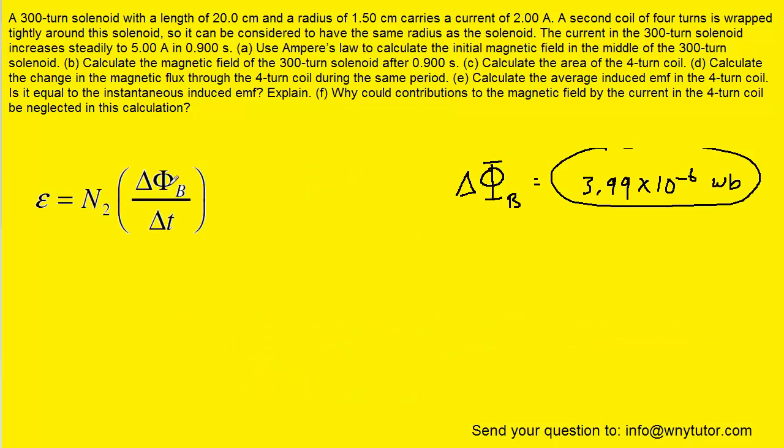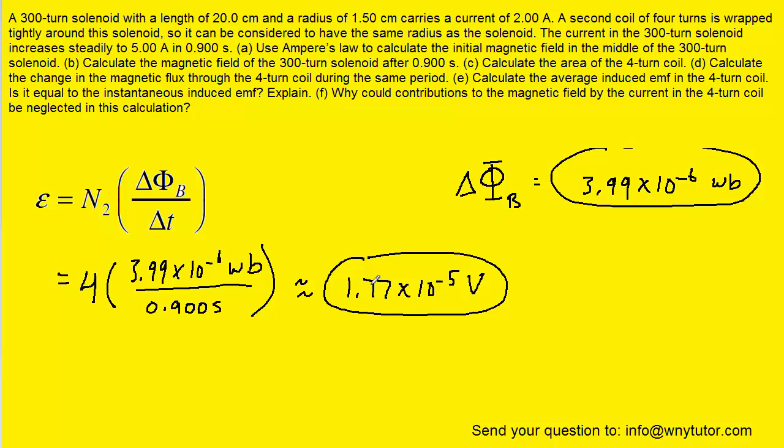On to part E, which asks to calculate the average induced EMF in the four-turn coil. We know that induced EMF in a coil equals the number of turns in the coil times the change in magnetic flux divided by the change in time. Because the question is asking about the four-turn coil, we know that capital N would be 4. We just figured out the change in magnetic flux in the previous part. And then the time interval was given to us as 0.9 seconds. This turns out to be roughly 1.77 times 10 to the minus 5 volts would be the unit for the induced EMF. That's the correct answer to part E of the question.